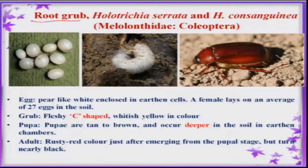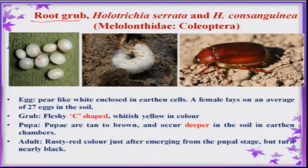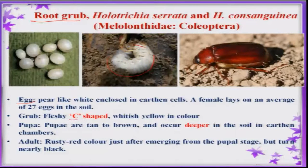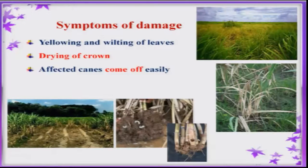Root grub is a pest occurring at the early stage, especially during May and June. Adults emerge after pre-monsoon showers and lay eggs in the soil. It attacks more in sandy soils and red soils. The grub is C-shaped; early first and second instar grubs feed on organic matter, and after the third instar they feed on sugarcane roots and rootlets. Because of its feeding, entire drying of the crown is seen, and when you pull the plant it comes out very easily.